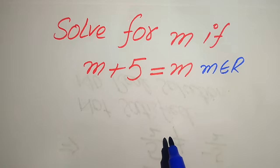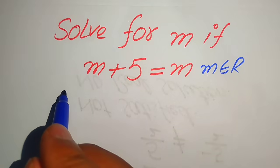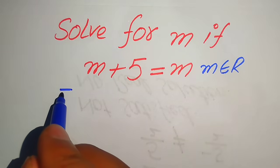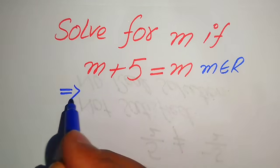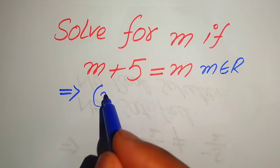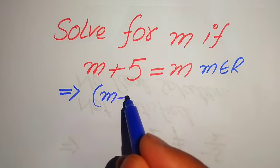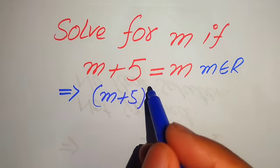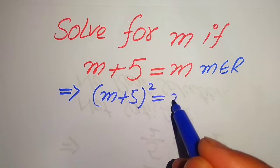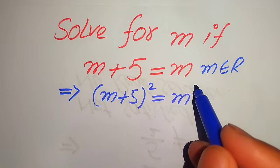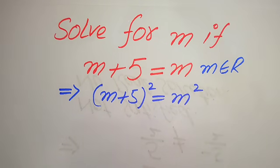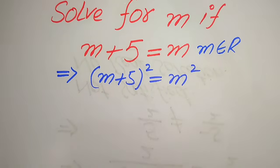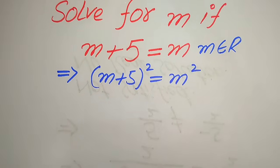The very first step we are going to do is take the square on both sides, so when you take the square it will be written as m plus 5 whole square is equals to m square. Now further in the next step we need to apply an algebraic formula to the left hand side.